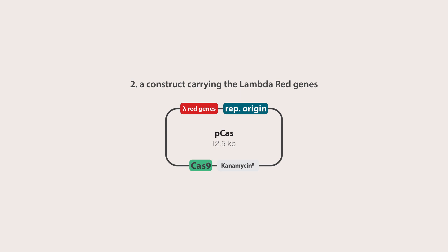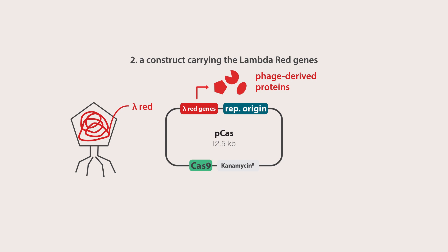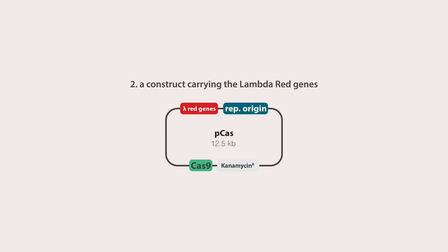Second, a construct carrying the lambda red genes is required. The lambda red genes encode phage-derived proteins that are crucial for enabling recombination of DNA fragments. The p-cast plasmid carries inducible lambda red genes, as well as constitutively expressed Cas9 and a kanamycin resistance gene.